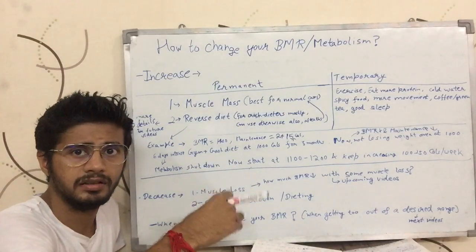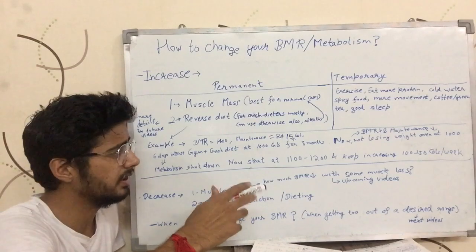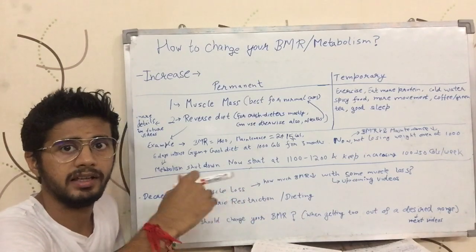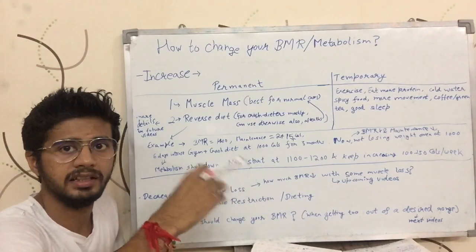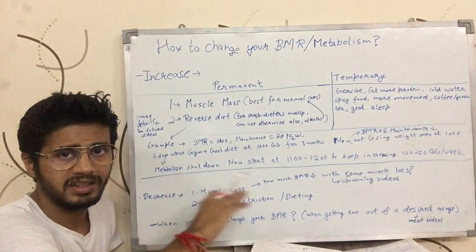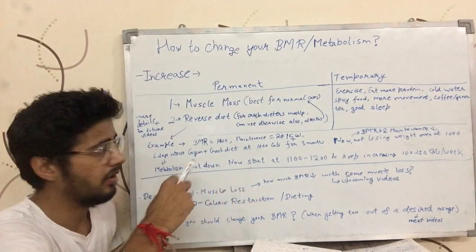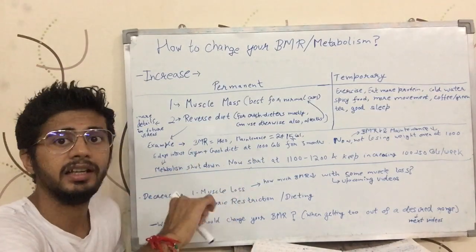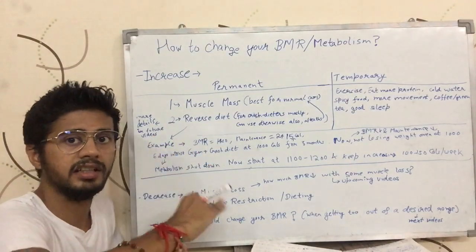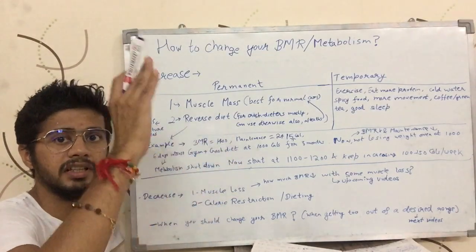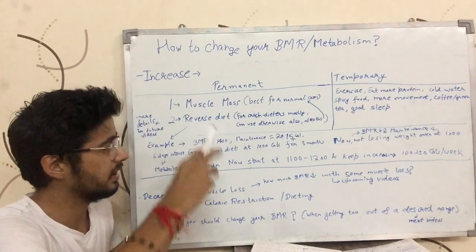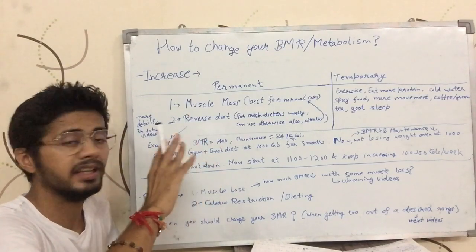So what should you do when your BMR is this low? In 10-day increments, we increase by 100 calories slowly and gradually. This is what we call reverse diet — when your BMR or metabolism is low, you reverse diet to bring it back up.